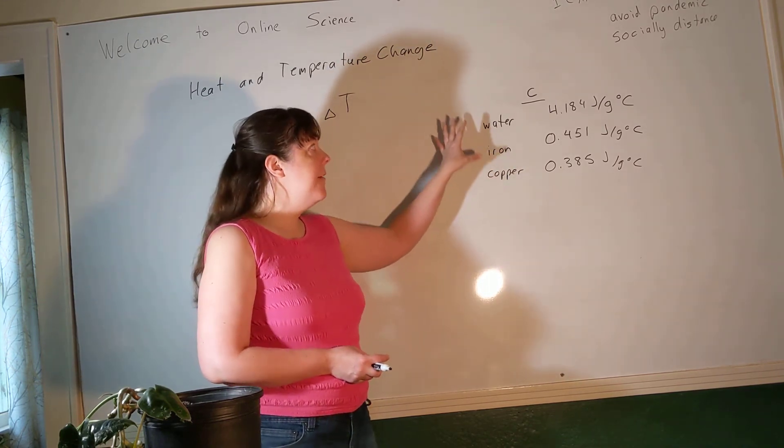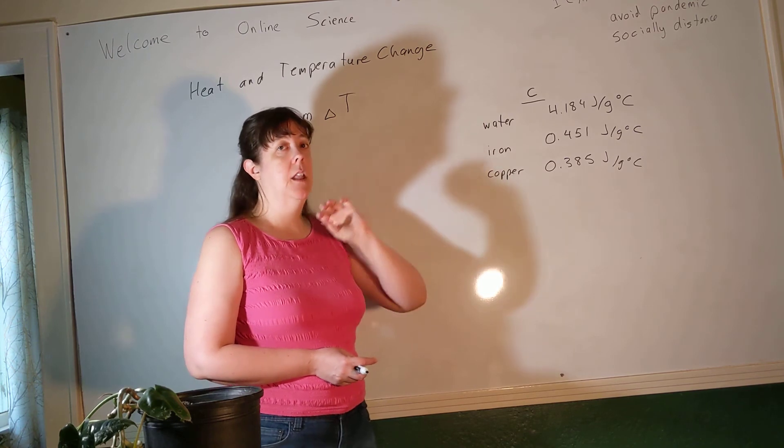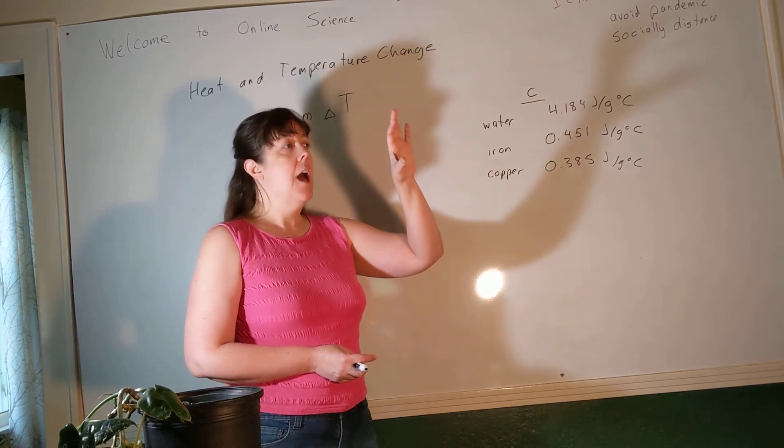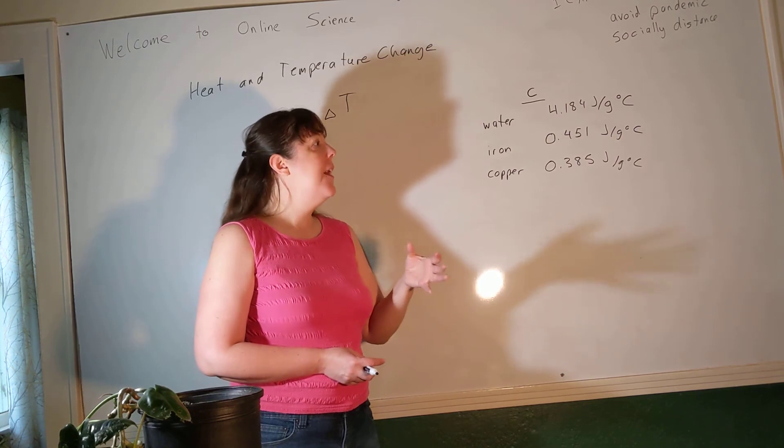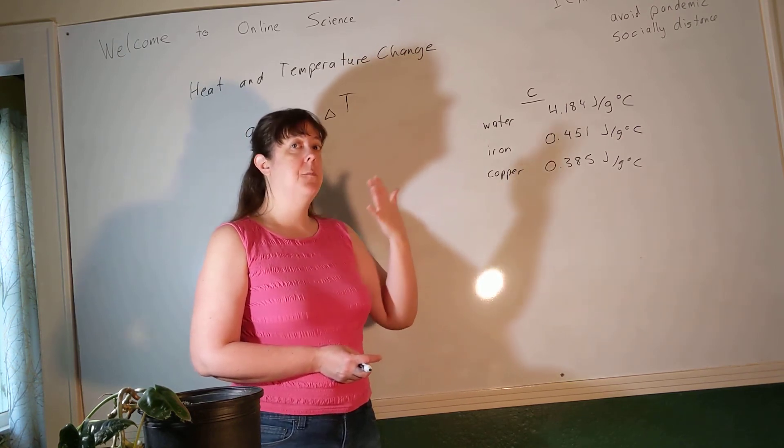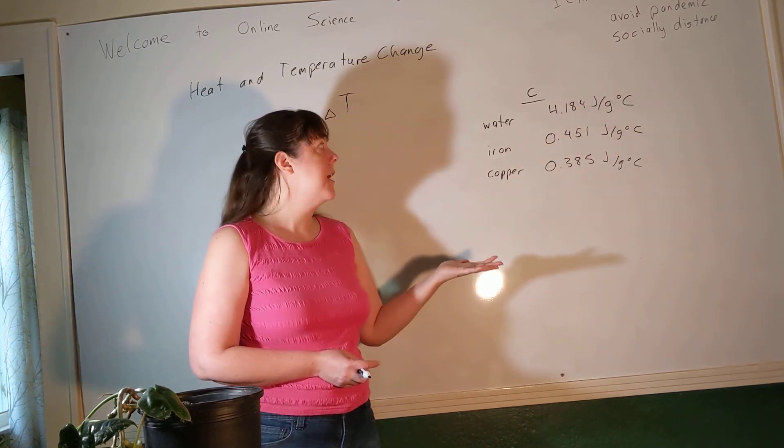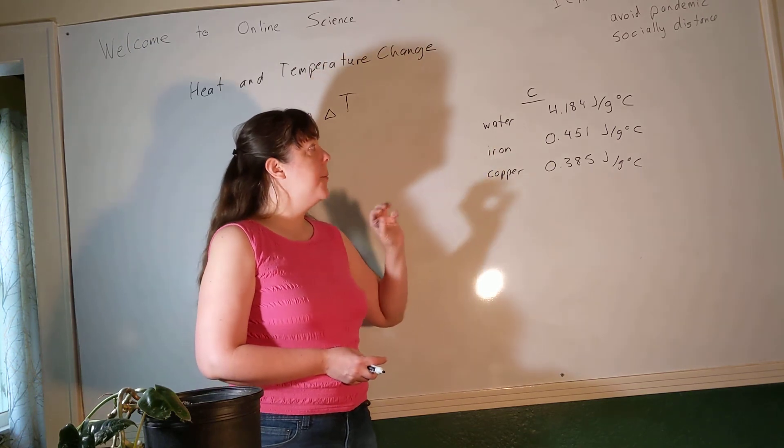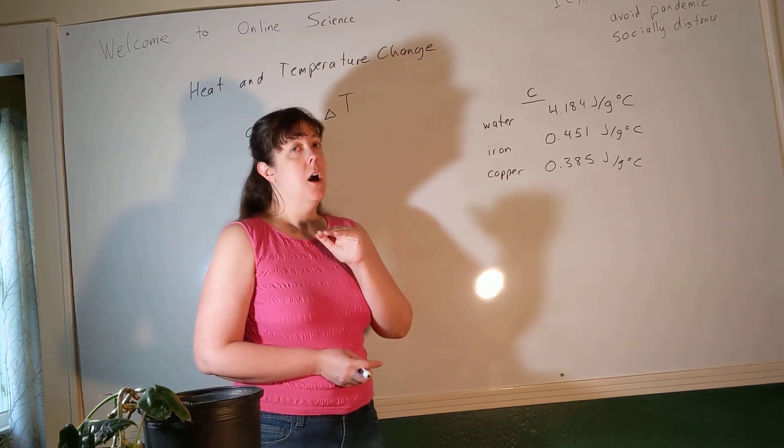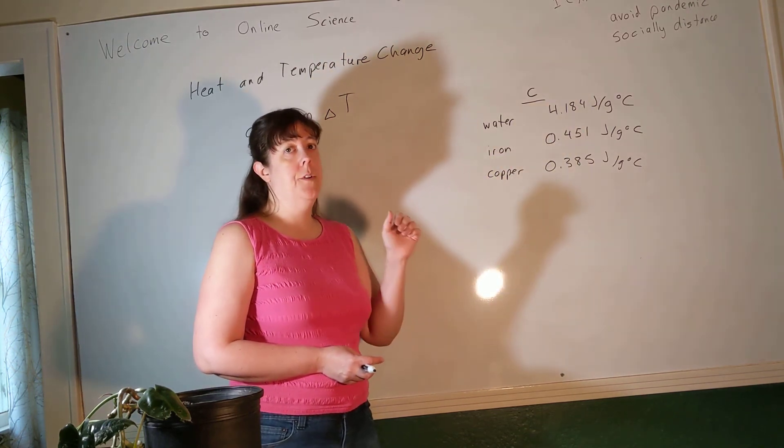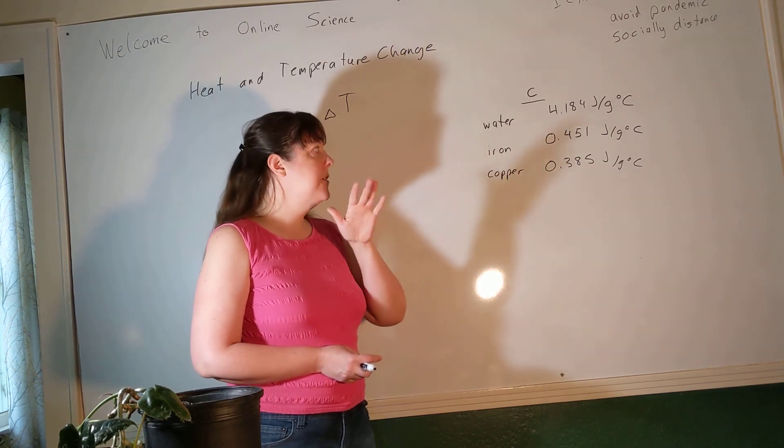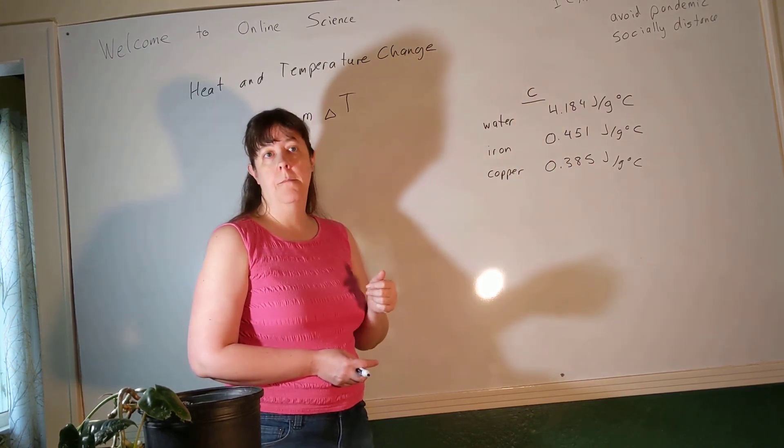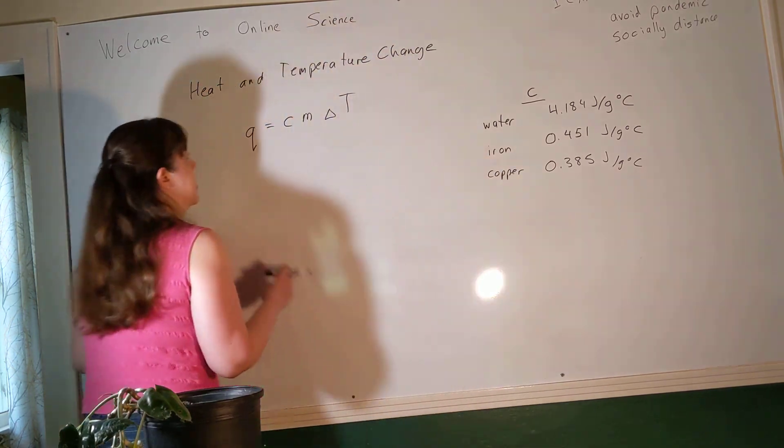So, if you have a high specific heat capacity, you need lots of heat to get hot, and then you have to give off lots of heat to cool down. I think of it like a big truck that's hard to speed up, but then it's also hard to slow down. Whereas something like iron and copper with low specific heat capacities are easy to heat up and then cool down quickly in the same way that like a bicycle can speed up pretty quickly and then stop pretty quickly. All right, so let's come back to the equation here, q equals cm delta t.